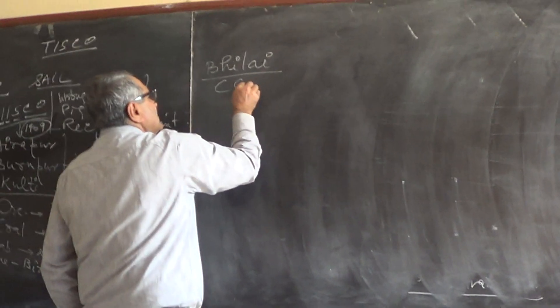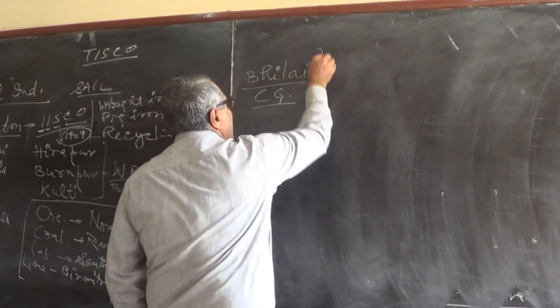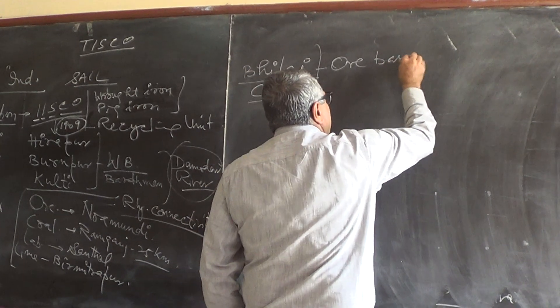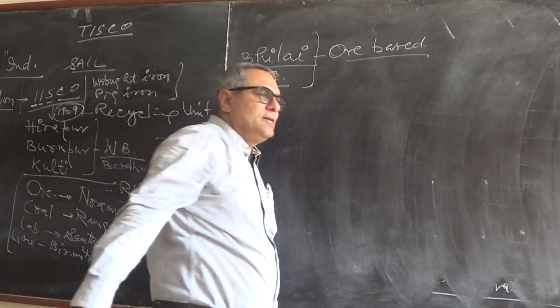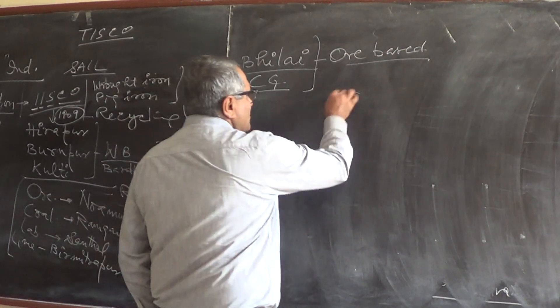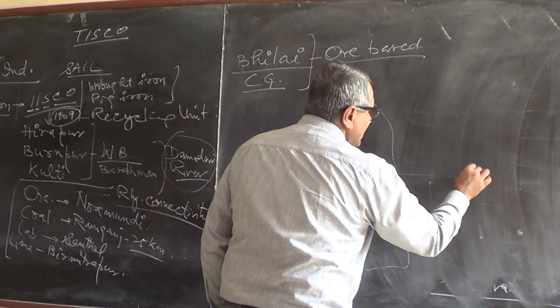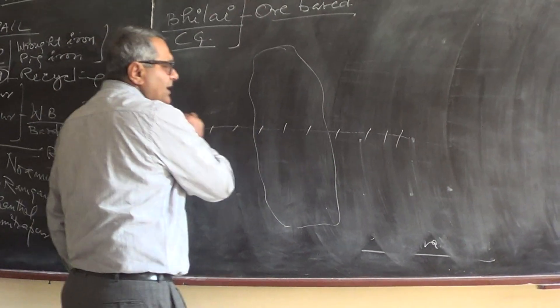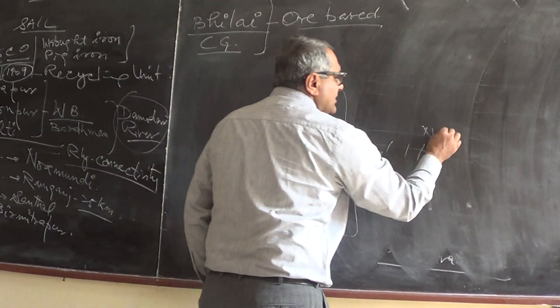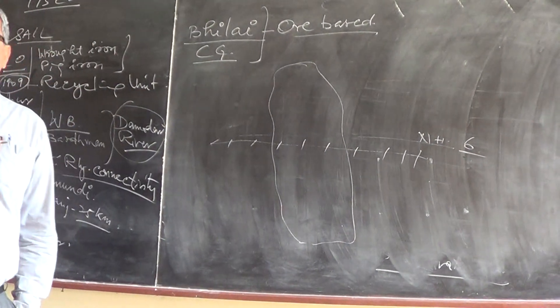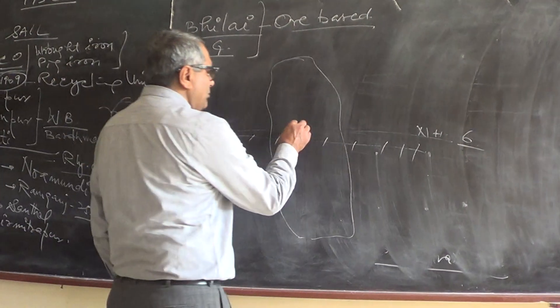Durg is in Chhattisgarh and this is Bhilai. This is Chhattisgarh, and this is the railway track and this is the national highway number NH6 connecting Mumbai to Kolkata. So this is Bhilai area.